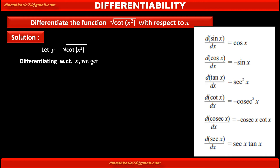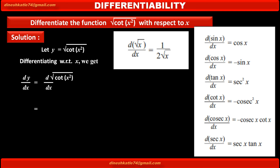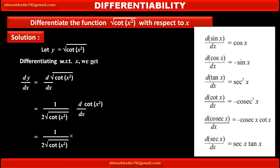Differentiating y with respect to x: dy/dx equals the derivative of square root of cot x squared with respect to x. To solve such type of problems, we have to use the formula: derivative of root x with respect to x is equal to 1 upon 2 root x. Applying this by chain rule, we get 1 upon 2 root of cot x squared, multiplied by the derivative of cot x squared with respect to x.